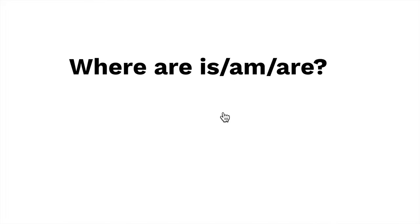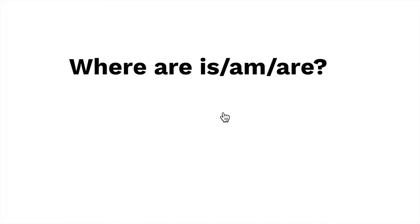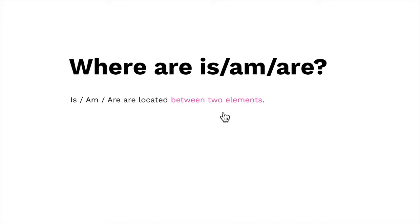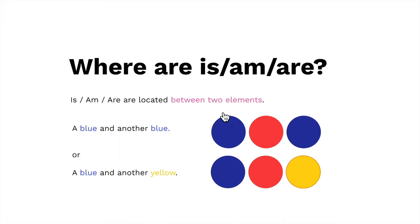Where can we find IS/AM/ARE in a sentence? IS/AM/ARE are located between two elements. They could be either between two blue elements, or between a blue and a yellow element.